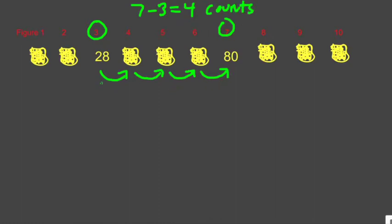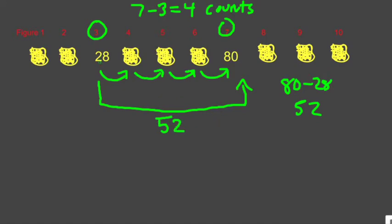The total distance that I'm traveling to get from 28 to 80 is 80 minus 28, 52. So my total distance is 52, and I'm traveling that 52 in 4 equal counts. So what am I counting by each time? I'm going to take this 52 and I'm going to divide by those counts to get 13. And that means in this sequence, each time we're counting by 13.